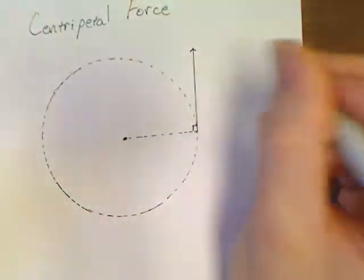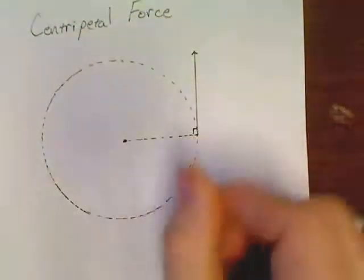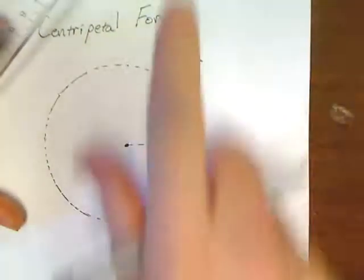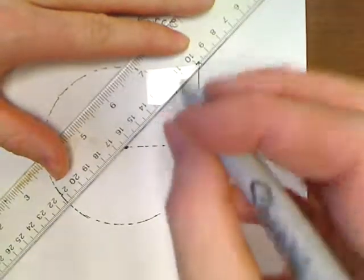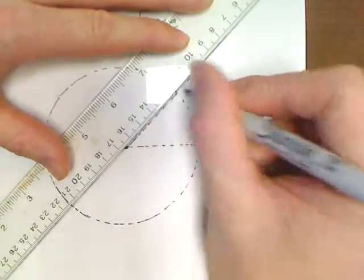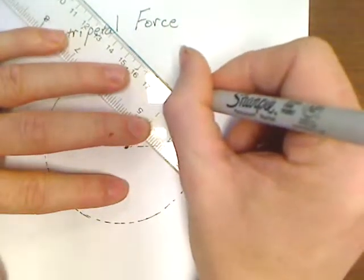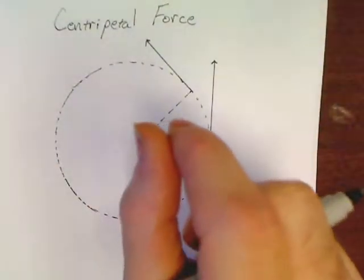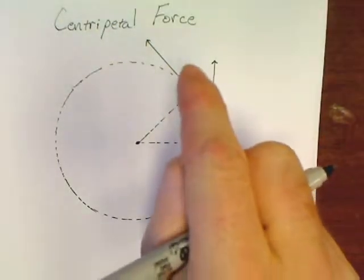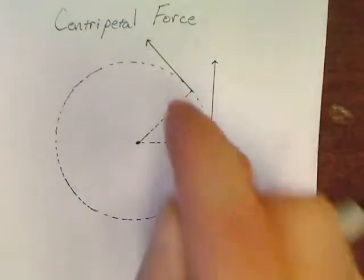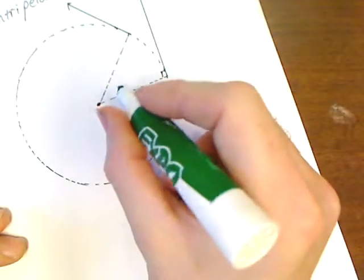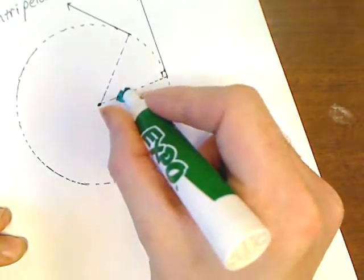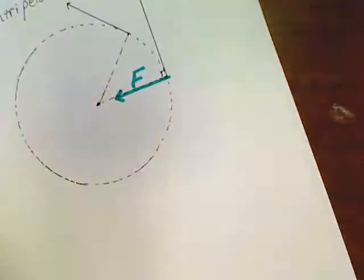So the thing is, the rock doesn't want to move in a circle. If you had a rock attached to a rope and you were swinging a circle, it doesn't want to. It wants to go in this straight line direction. But something is actually acting on that rock and making it travel in the circle. And that's what we're talking about in this unit. If something's traveling in a circle, there must be some force keeping it in this circle.